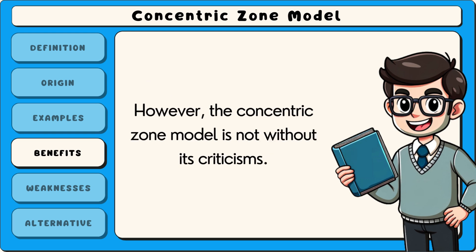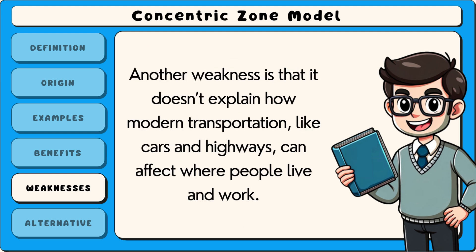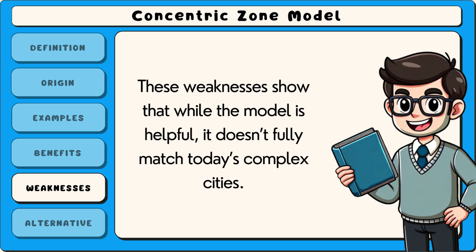However, the concentric zone model is not without its criticisms. One weakness is that it assumes all cities grow in a neat, circular pattern. But in real life, cities often grow in uneven or unpredictable ways because of natural features like rivers or mountains. Another weakness is that it doesn't explain how modern transportation, like cars and highways, can affect where people live and work. The model also doesn't account for mixed-use neighbourhoods where people live, work and shop in the same area. These weaknesses show that while the model is helpful, it doesn't fully match today's complex cities.